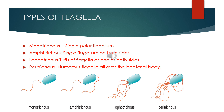Monotrichus refers to a single polar flagellum. Amphitrichus means a single flagellum on both sides of the cell. Lophotrichus means tufts of flagella at one or both sides. Peritrichus means numerous flagella distributed all over the bacterial body.